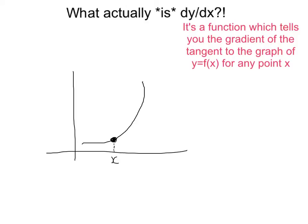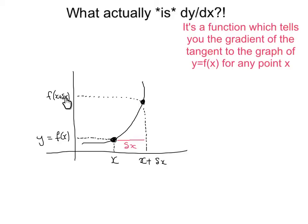What we do is set up another point on the curve, because gradient is change in y over change in x, so we need two points. This second point is going to be at x plus delta x — we go forward a little bit of x. If we feed these two x-values into the function, we get f of x at the first point, and f of x plus delta x at the second point. The change in height is called delta y, a little bit of y.